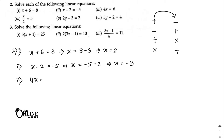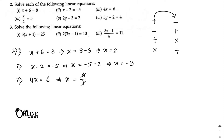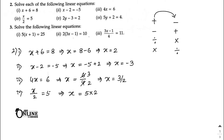Number three: 4x = 6. Here 4 is multiplying x, so x = 6/4, which simplifies to x = 3/2 as your answer. Number four: x/2 = 5. Since x is divided by 2, we get x = 5 × 2, so x = 10 as your answer.